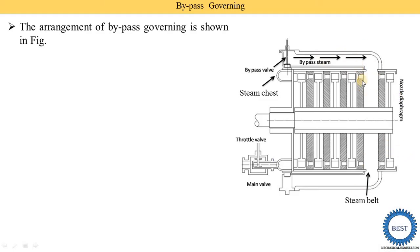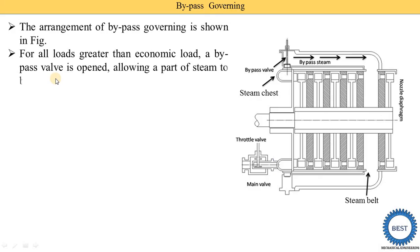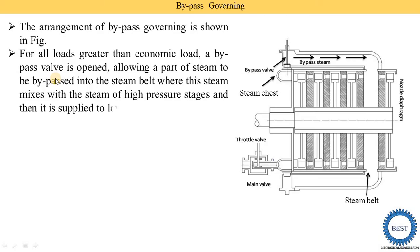The steam coming out from the high pressure stage is mixed with the bypass steam and then supplied to the low pressure stage. The place at which the bypass steam and the steam from the high pressure stage are mixed is called the steam belt, and this portion is called the steam chest. For all loads greater than the economic load — that is, more than 80 percent of turbine capacity — the bypass valve is open; otherwise, the bypass valve is closed.